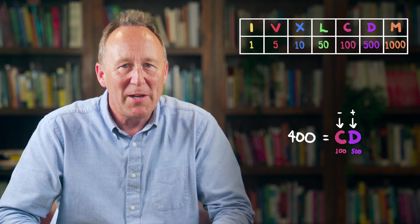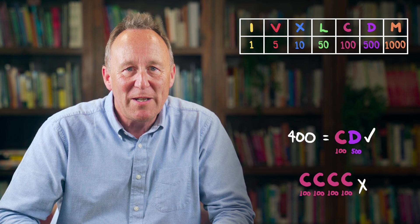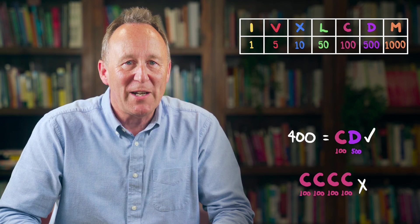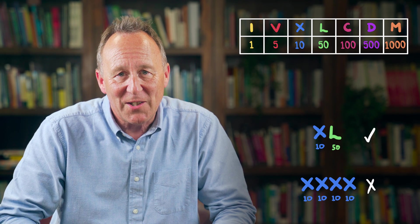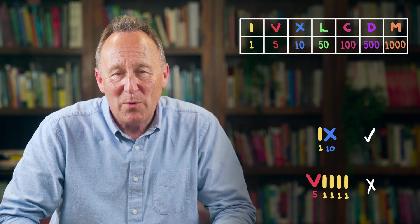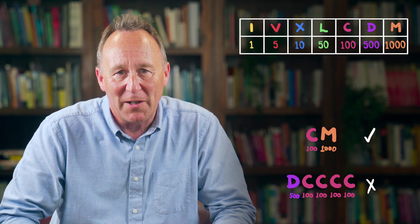As a bit of an aside, you might think that 400 should be written as CCCC, and that does make a lot of sense, but there's a convention in Roman numerals that you should only have up to three of the same letter in a row. If you want to represent 4, 40, or 400, then you switch to the subtraction method. Use IV instead of IIII for 4, XL instead of XXXX for 40, and CD instead of CCCC for 400. Similarly, we use IX instead of VIII for 9, XC instead of LXXXX for 90, and CM instead of DCCCC for 900. The idea is that it uses fewer letters, so it's shorter to write.